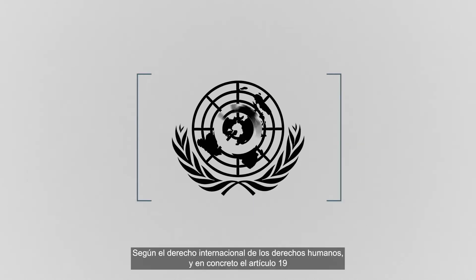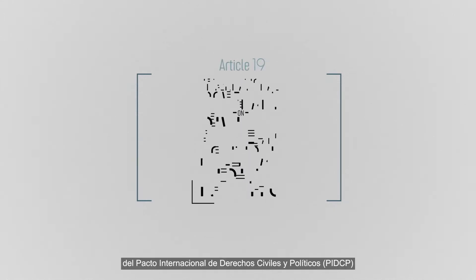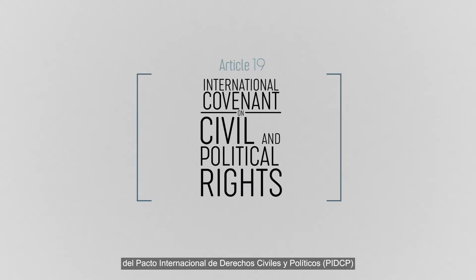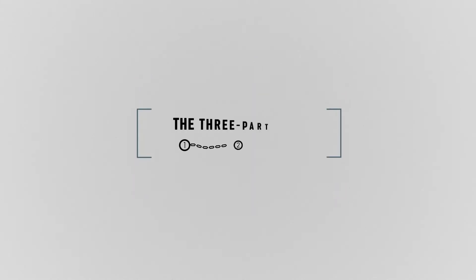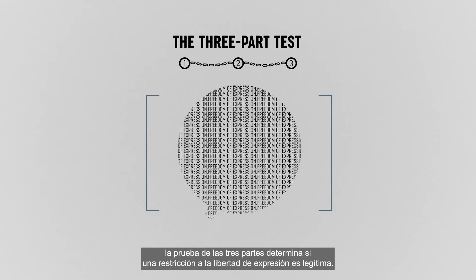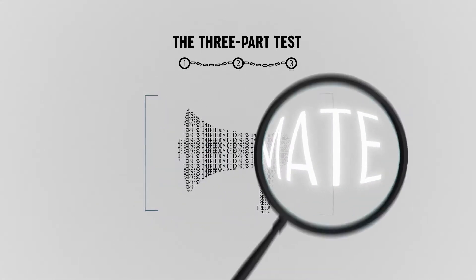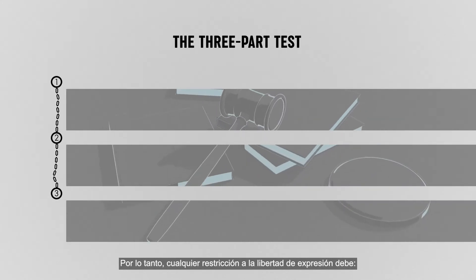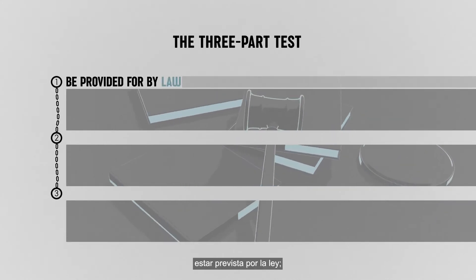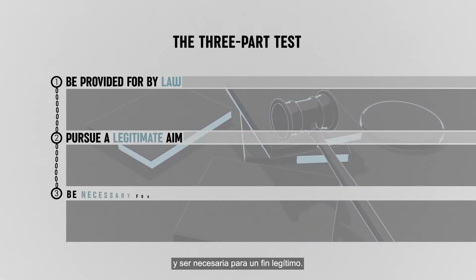Under international human rights law, and specifically Article 19 of the International Covenant on Civil and Political Rights, or ICCPR, the three-part test determines whether a restriction on freedom of expression is legitimate. Any restriction on freedom of expression must thus be provided for by law, pursue a legitimate aim, and be necessary for a legitimate purpose.